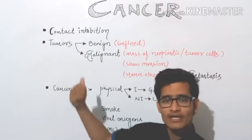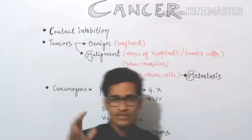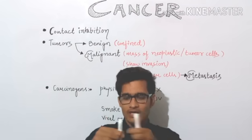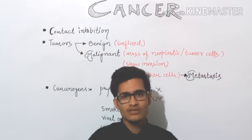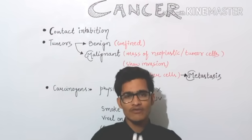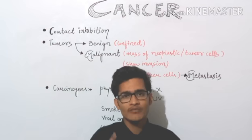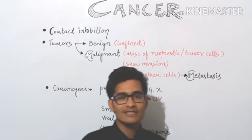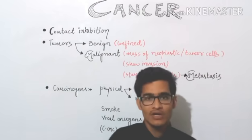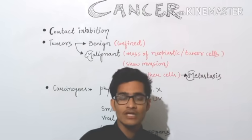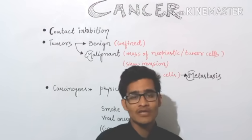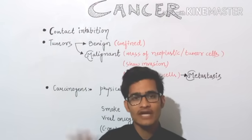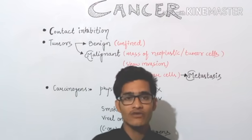The first point is contact inhibition. This is the property of normal cells. A normal cell will enlarge in size and then divide to maintain the nuclear and cytoplasmic ratio — we have already talked about this in the cell cycle and cell division chapter. Cell division takes place in a regulated and controlled manner.